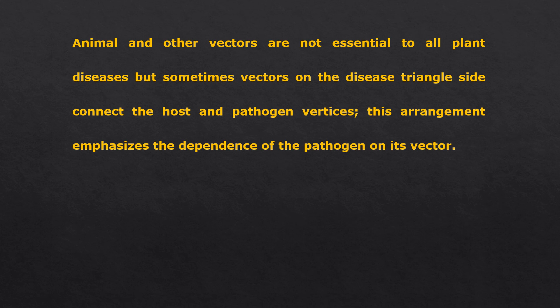Sometimes vectors on the disease triangle side connect the host and pathogen vertices, emphasizing the dependence of the pathogen on its vector. For example, the bacteria that causes Pierce's disease is Xylella fastidiosa — it is transmitted by sharpshooter leafhoppers and spittle bugs, both of which feed on the xylem of grapevines. This illustrates how important vectors can sometimes be in the transmission of disease.